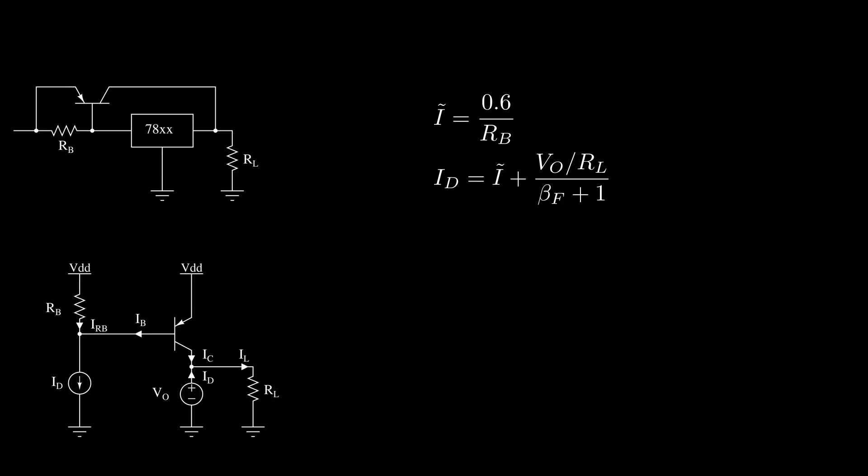The regulator will continue to provide a current Id equal to I tilde plus a small load-dependent contribution dampened by the beta of the transistor, while the transistor takes all the remaining current.